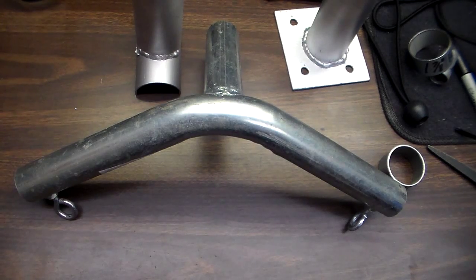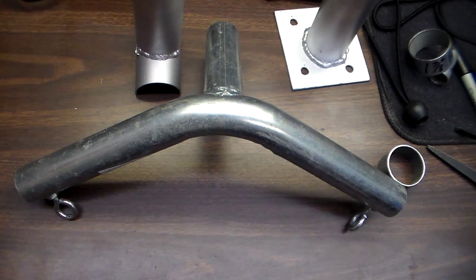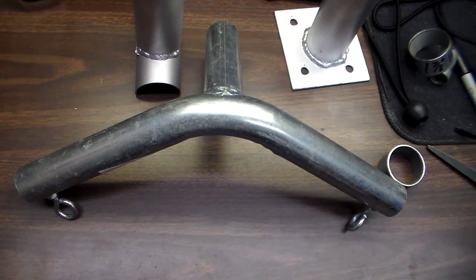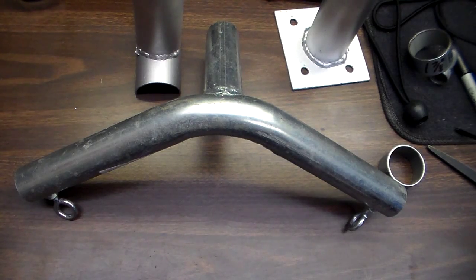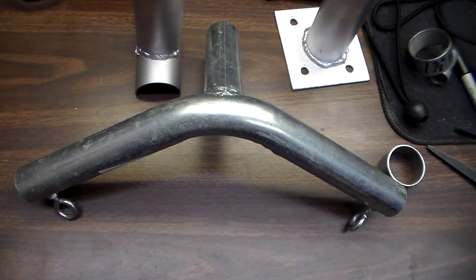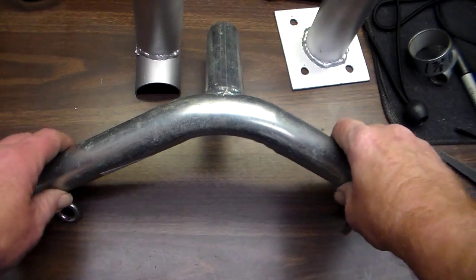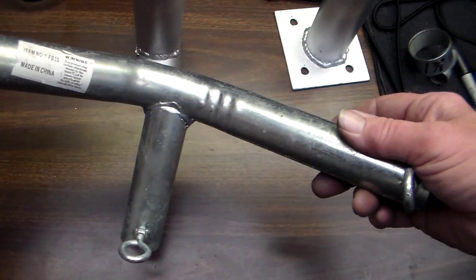The problem you run into is the manual benders that they make for pipe, once you get beyond one inch EMT conduit, it's a little tough to bend it by hand. And they sell benders. You can buy them at Harbor Freight. They've got a hydraulic bender. I'm not sure how well that's going to work on tubing, though. You don't want to kink the stuff. And you can see this one here.